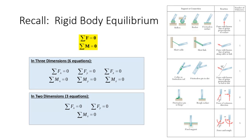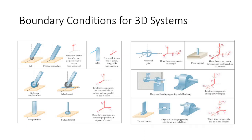3D really isn't any different than 2D in terms of strategy. For instance, if you're going to sum your moments, sum your moments about the point that has the most unknowns through it, so you can isolate the other stuff you need to find. We're going to do the same thing here. On this slide I have an image of the 2D boundary conditions, and maybe I should take a look at the 3D boundary conditions.